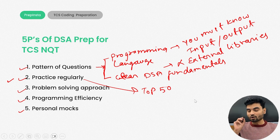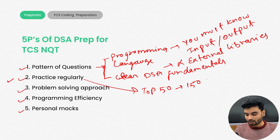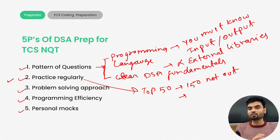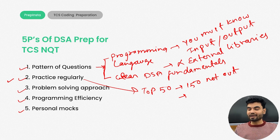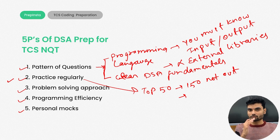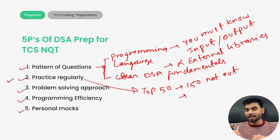So now: top 50 TCS-specific questions, second thing 150 not-out, third thing prepare previous year question papers. Search for 'TCS previous year question paper' on PrepInsta and you'll get all the previous year papers asked in TCS so far. Whenever you're sitting in a particular exam, always understand the coding pattern of how a particular company asks questions.